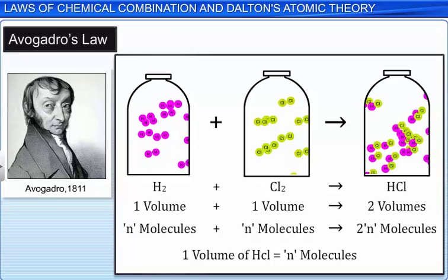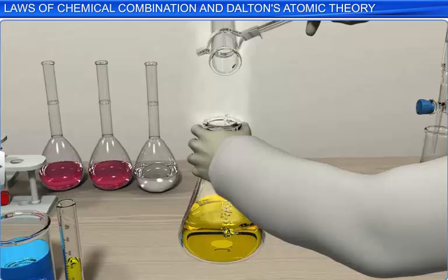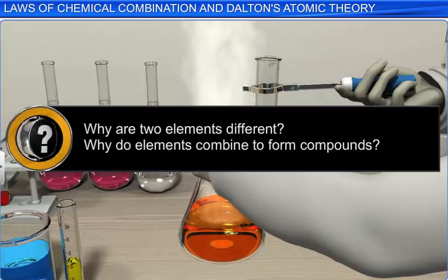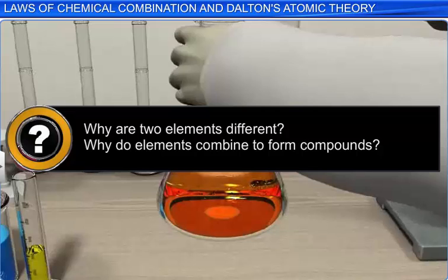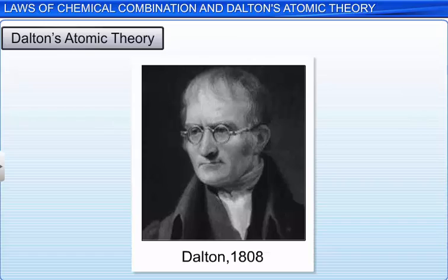Thus, proving Avogadro's Law. While scientists studied matter and formed the laws of chemical combination, they were unable to answer some questions. For example, why are two elements different or why do elements combine to form compounds? Dalton studied the structure of matter and in 1808 he proposed a theory to describe the structure of matter. This theory was named after him as Dalton's atomic theory.